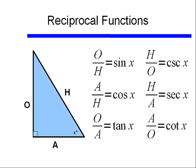We remember that sine and cosecant, cosine and secant, and tangent and cotangent were reciprocal functions of each other. That is, sine of x equals 1 over cosecant x, cosine of x equals 1 over secant of x, and tangent of x equals 1 divided by cotangent of x.